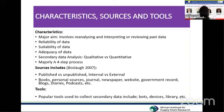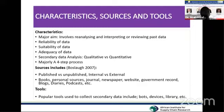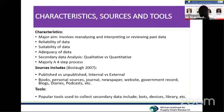Electronic devices such as smartphones and laptops are also tools that can be used for collecting secondary data. Additionally, libraries — both traditional libraries where one can physically access information, and online digital libraries available on the internet — can be used to find specific data suitable for one's research project.